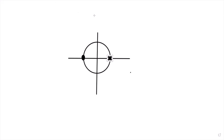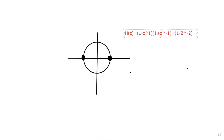If we cascade a low pass filter (1 - z⁻¹) and a high pass filter (1 + z⁻¹), we get the band pass transfer function (1 - z⁻²). This IIR band pass filter gives you the advantage of controlling the bandwidth and center frequency, and is very flexible compared to an FIR filter.